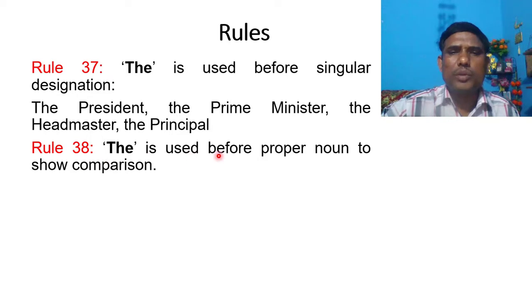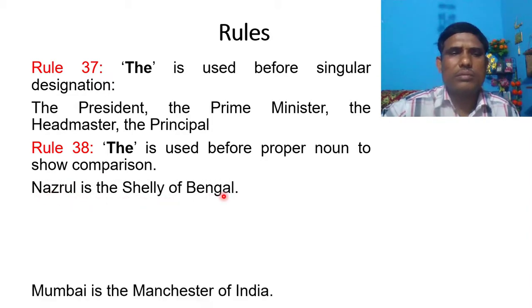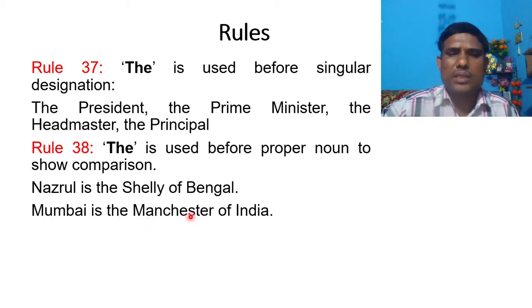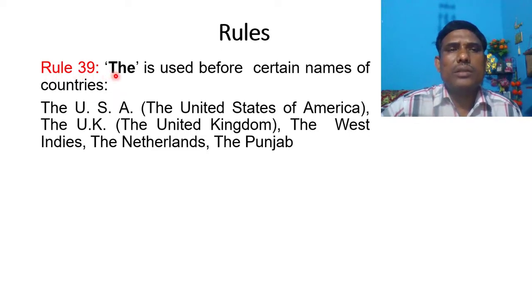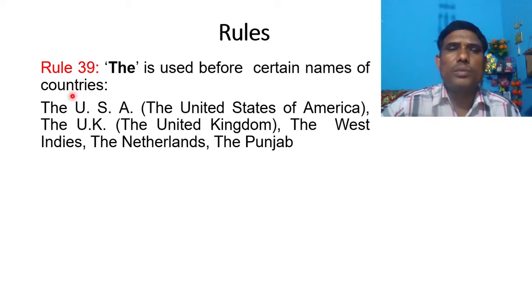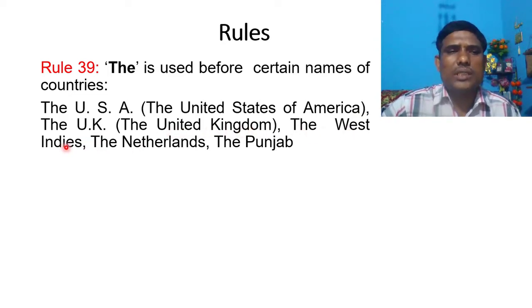Rule number 38: THE is used before a proper noun to show comparison. For example, 'Nazrul is the Shelley of Bengal.' 'Mumbai is the Manchester of India.' Rule number 39: THE is used before certain names of countries. For example: the USA, the United States of America, the UK, the United Kingdom, the West Indies, the Netherlands, the Punjab.